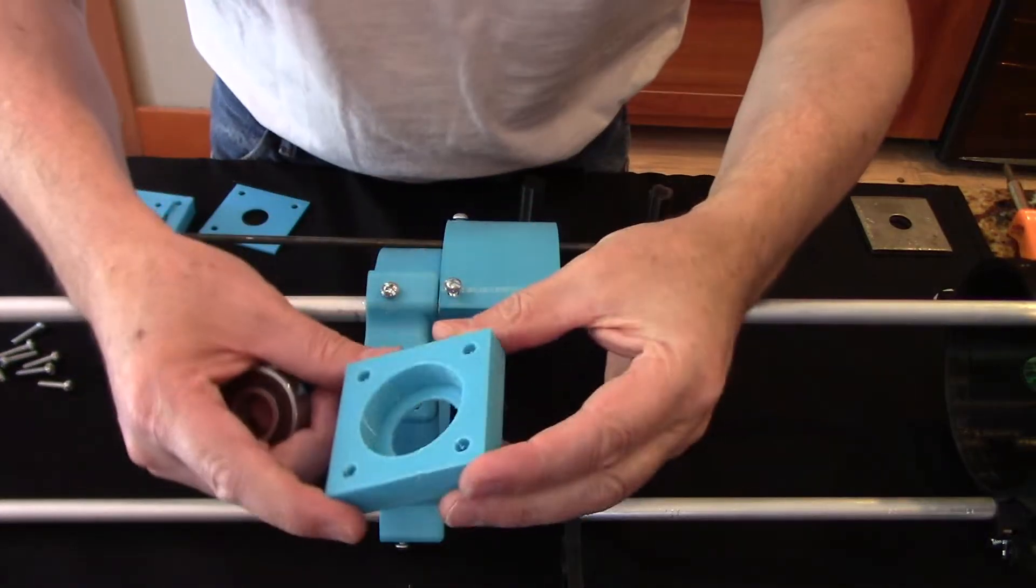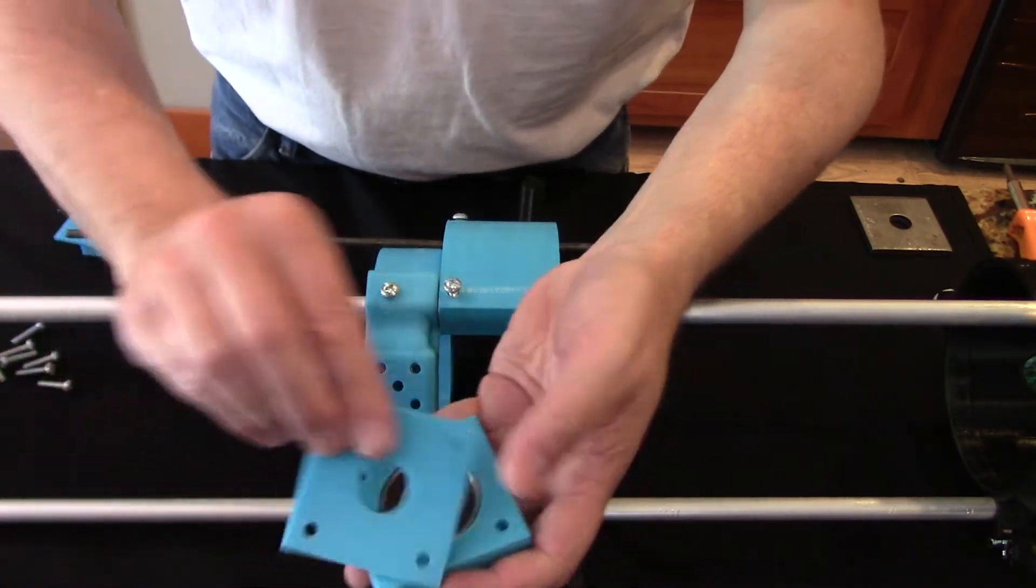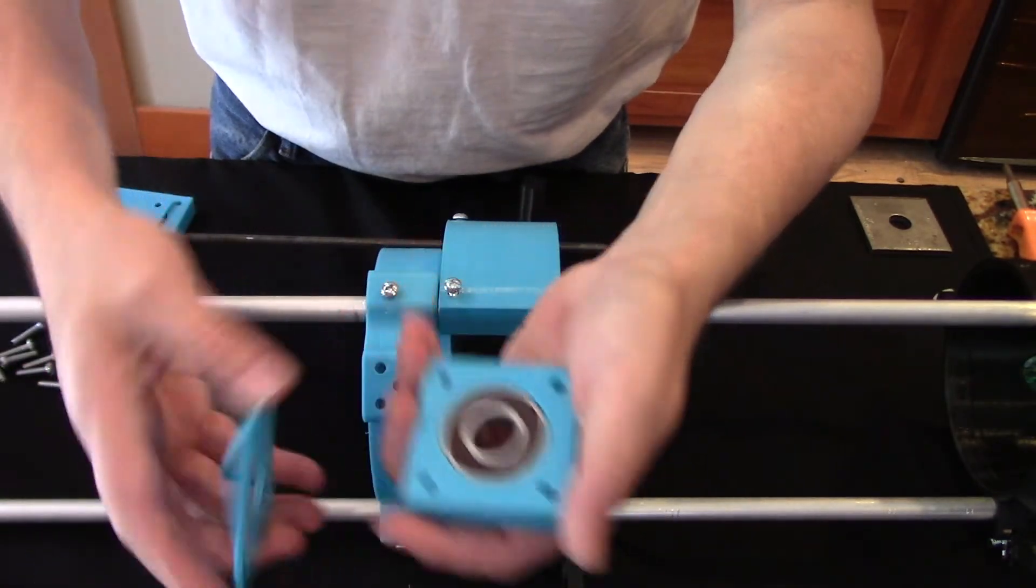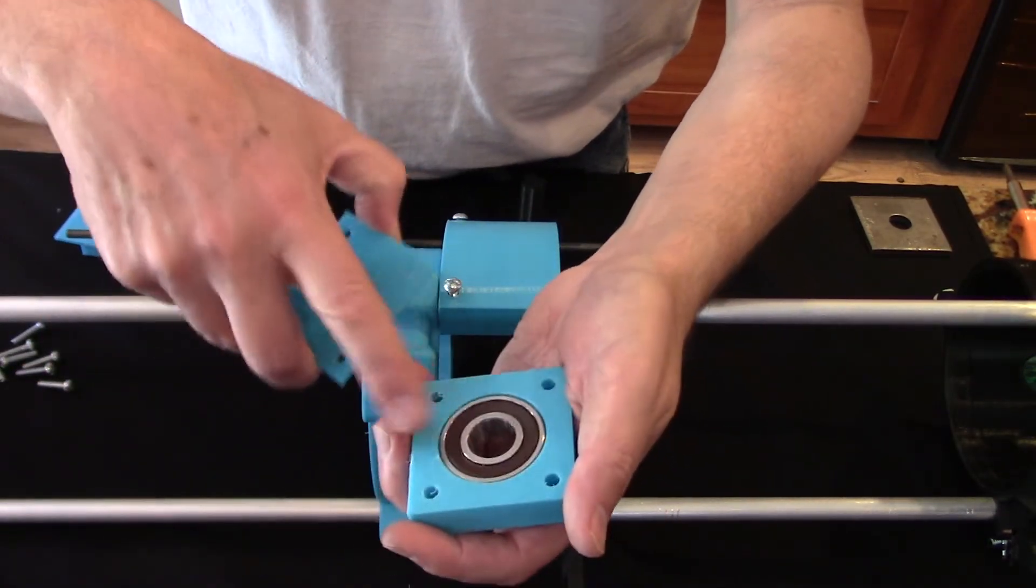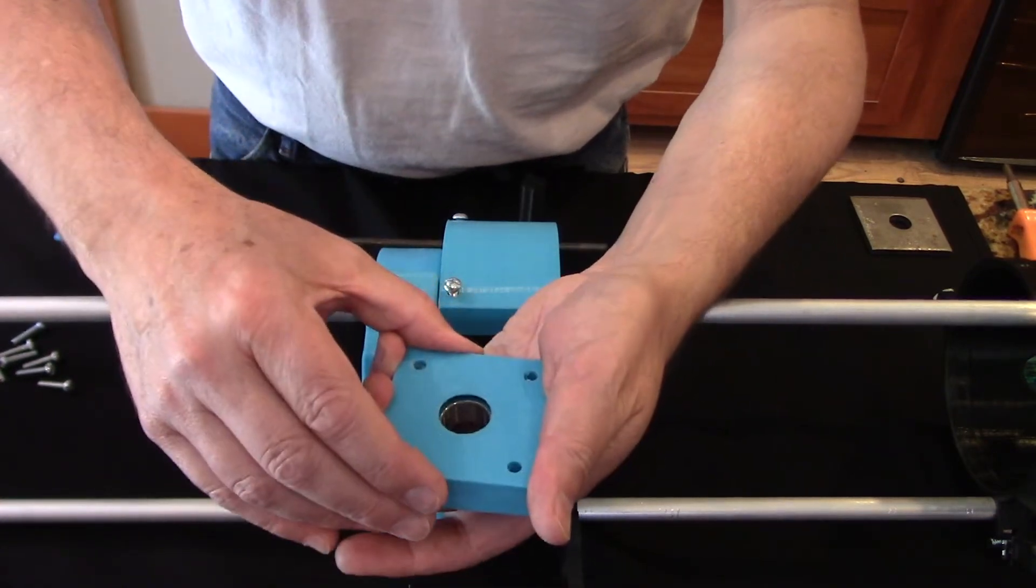So this part right here holds the bearing. And then you can put this little cap on and there's a divot here which will allow the inner race to spin freely but it'll hold the outer race and so the bearing won't slide.